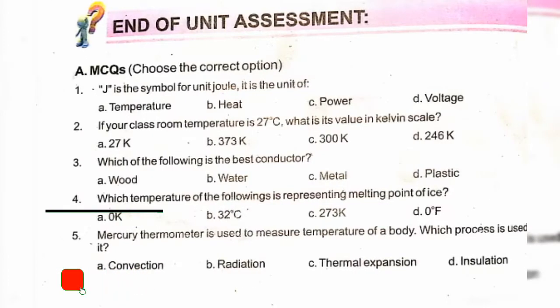Unit 10: Heat and Temperature MCQ. J is the symbol for joule, which is the unit of heat. If your classroom temperature is 27 degrees Celsius, what is its value on the Kelvin scale? Option C: 300K.